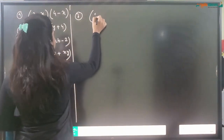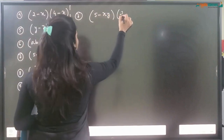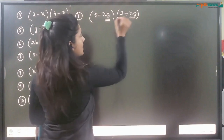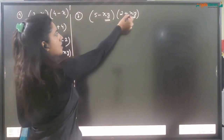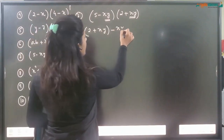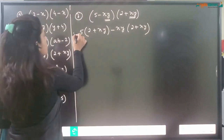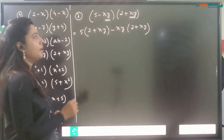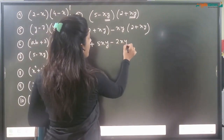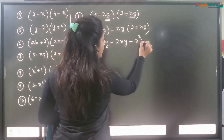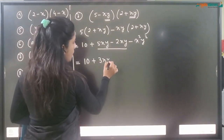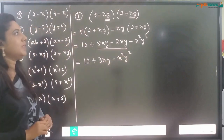Question number 7: (5 - xy)(2 + xy). We can't use the formula here because the x terms are not the same even if reversed. So multiply normally: 5(2 + xy) - xy(2 + xy) = 10 + 5xy - 2xy - x²y² = 10 + 3xy - x²y². This is the answer.